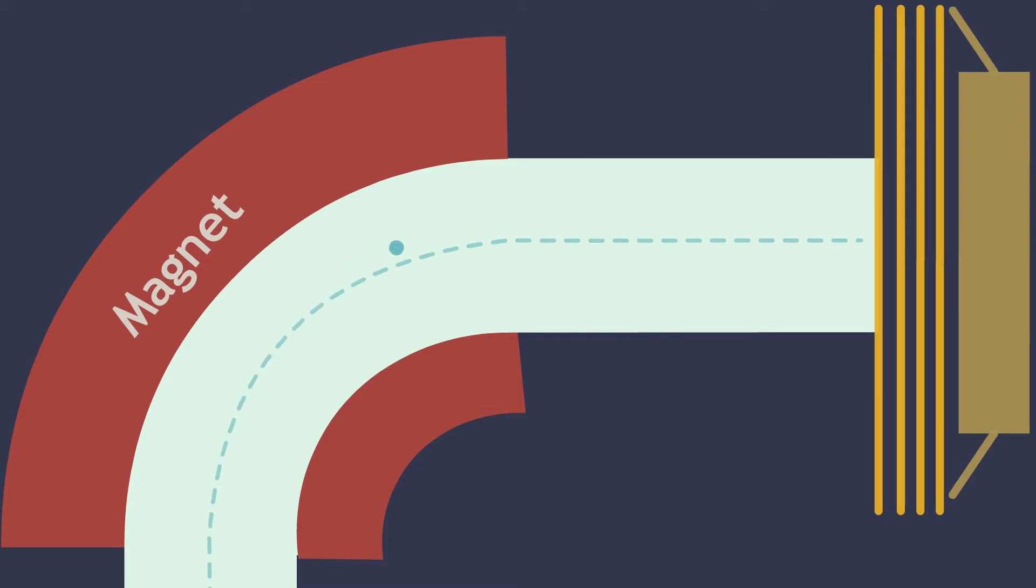Ions with a higher mass-to-charge ratio will be more resistant to the magnetic force and turn more sluggishly. Conversely, ions with lower ratio will turn more efficiently. The ions continue on this path until they hit the detector plate.